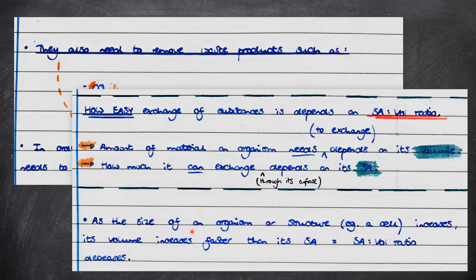Note that as the size of an organism or structure, such as a cell, increases, its volume increases at a faster rate than its surface area does, so the larger the organism, the smaller the surface area to volume ratio.